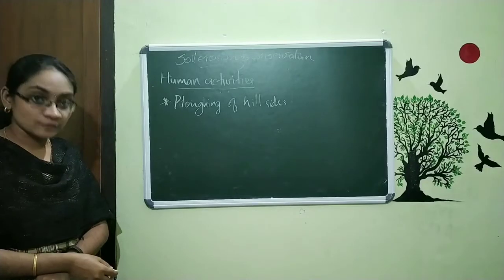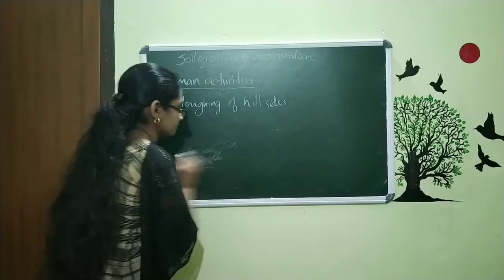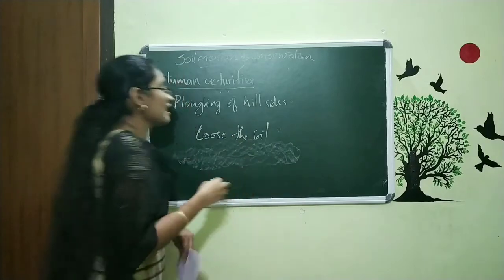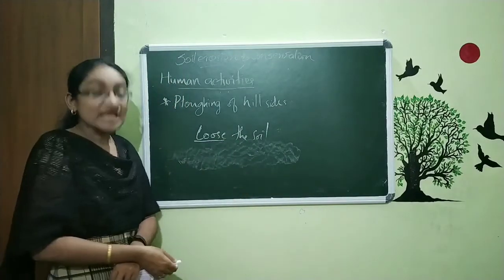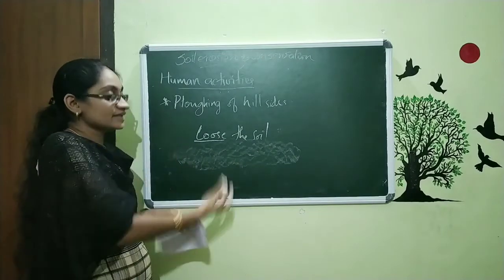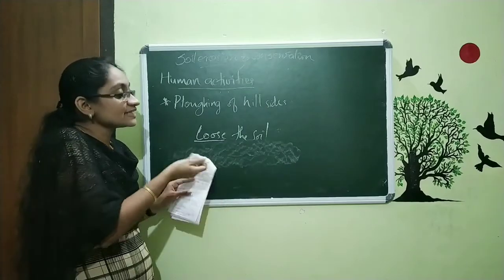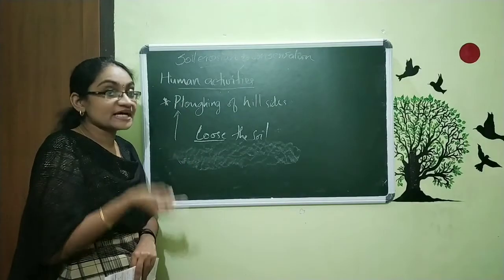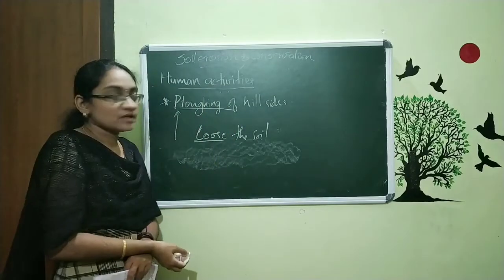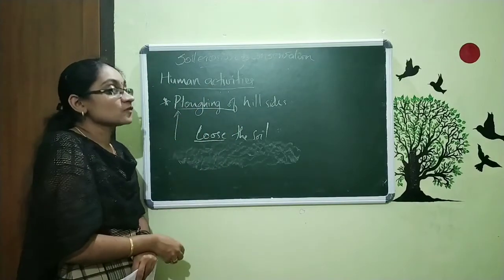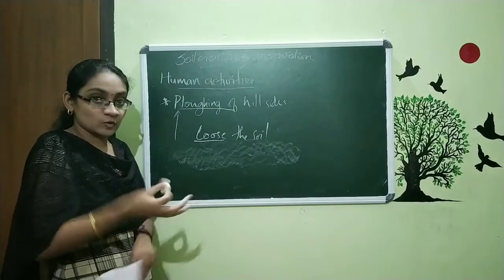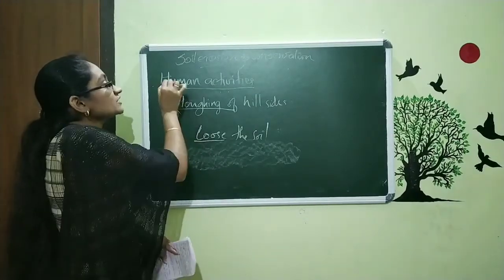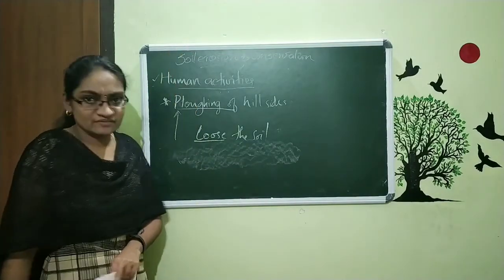The third human activity is plowing. Plowing means we are loosening the soil. After plowing, the soil becomes loose, and when running water or wind comes, the soil is removed from that region. So plowing is also a human activity that leads to soil erosion. We are focusing on plowing of hillsides because on hillsides the speed of wind is higher. This covers all the human activities that lead to soil erosion.